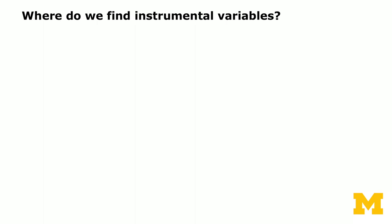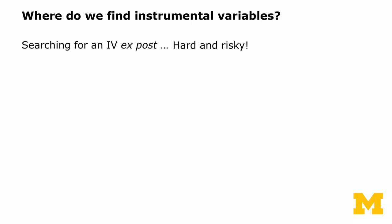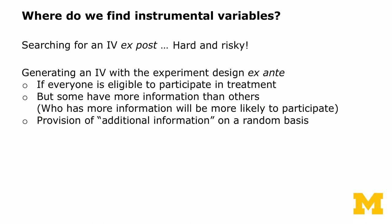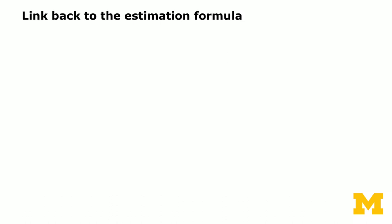The question remains: where do we find instrumental variables? It works like magic, but where do we find it? You can generate your dataset and then search for an IV ex post after your experiment — this is hard and risky. A much better approach is to generate an instrument with your experiment design before you run the experiment. In the job training program, if everyone is eligible to participate but some have more information than others, you can provide this additional information on a random basis — for example, having a social worker visit a random subsample of households, or randomly delivering information brochures or emails so that a random subset has more information than others.